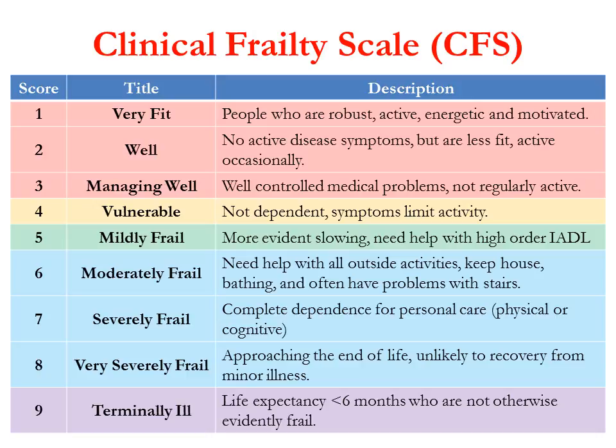A score of five represents patients who are mildly frail — more evident in slowing and needing help with independent activities of daily living. Scores of six, seven, and eight represent progressively increased levels of frailty, with patients needing more help with inside and outside activities, greater dependency, disability, and comorbid illness. Those with a score of eight, categorized as very severely frail, may be approaching end of life and are less likely to recover from even minor insults. A score of nine represents terminally ill patients with a life expectancy of less than six months, who may not themselves be frail. Patients scoring five through eight would be considered frail.